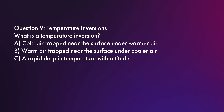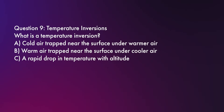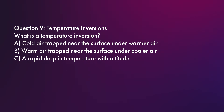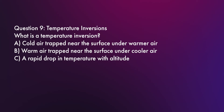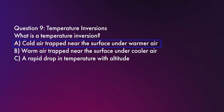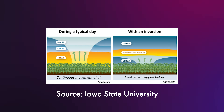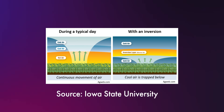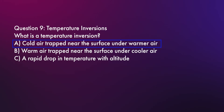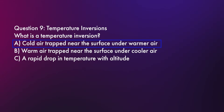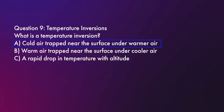Question number nine: What is a temperature inversion? Is it A, cold air trapped near the surface under warmer air; B, warm air trapped near the surface under cooler air; or C, a rapid drop in temperature with altitude? The correct answer is A — cold air trapped near the surface under warmer air. Inversions can create stable layers of air but can trap pollutants and reduce visibility near the surface, making it potentially non-ideal for drone flight. Option B describes normal atmospheric conditions, and C also describes a normal temperature drop with altitude — inversions are the exception.